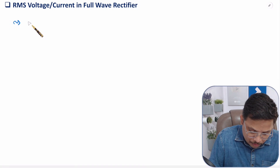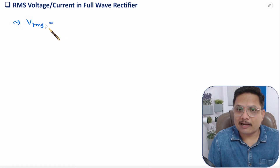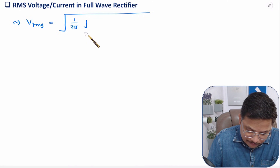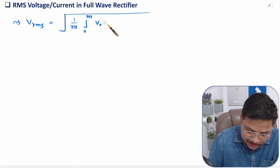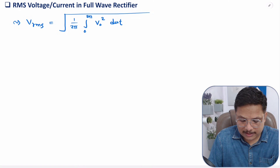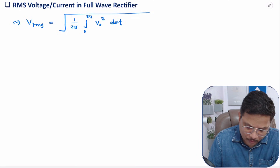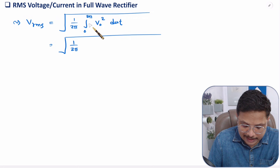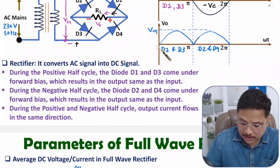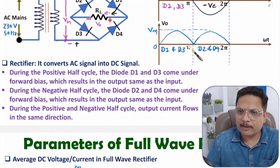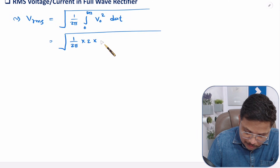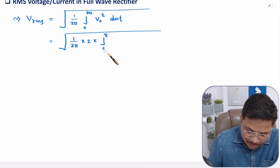Now let us derive RMS voltage. The basic RMS equation is: square root of (1/2π × integral from 0 to 2π of v² d(ωt)). Since the waveform repeats from 0 to π and π to 2π, we take double the integral from 0 to π: square root of (1/2π × 2 × integral from 0 to π of Vm² sin²(ωt) d(ωt)).